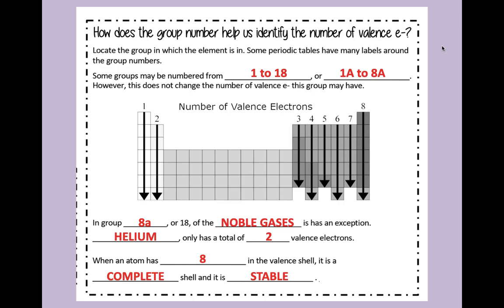How does the group number help us? Any group number is going to give you the number of valence electrons. Anything in group one is going to have one valence electron. Anything in group two will have two. Anything in group 13 is actually going to have three. Notice we got rid of the one in front of the 13. Anything in group 14 is going to have four. Anything in group 15 will have five. 16 will have six. 17 will have seven. And group 18 will have eight. There is one exception in group 18.